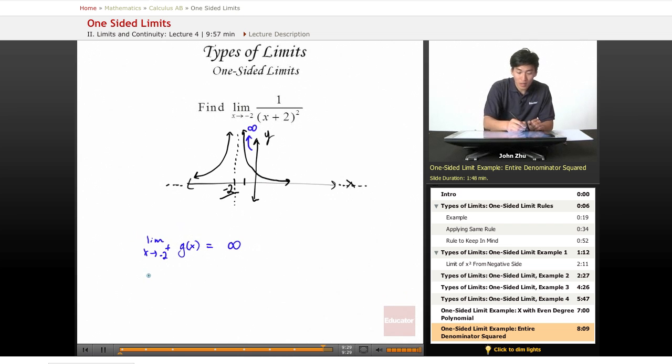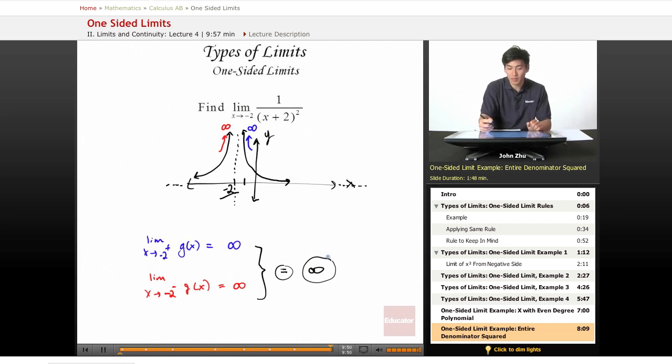And what about from the left side? x approaches negative 2 from the negative side. Well, this also approaches the asymptote towards infinity. So now we know that these two limits are equal, which means that infinity is our answer to the limit problem.